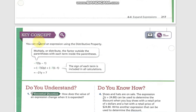Arriving to the key concept, you can expand an expression using the distributive property. Multiply or distribute the factor outside the parentheses with each term inside the parentheses. So, if I have here a variable, a number, whatever, I'm going to multiply it with what comes inside the parentheses.